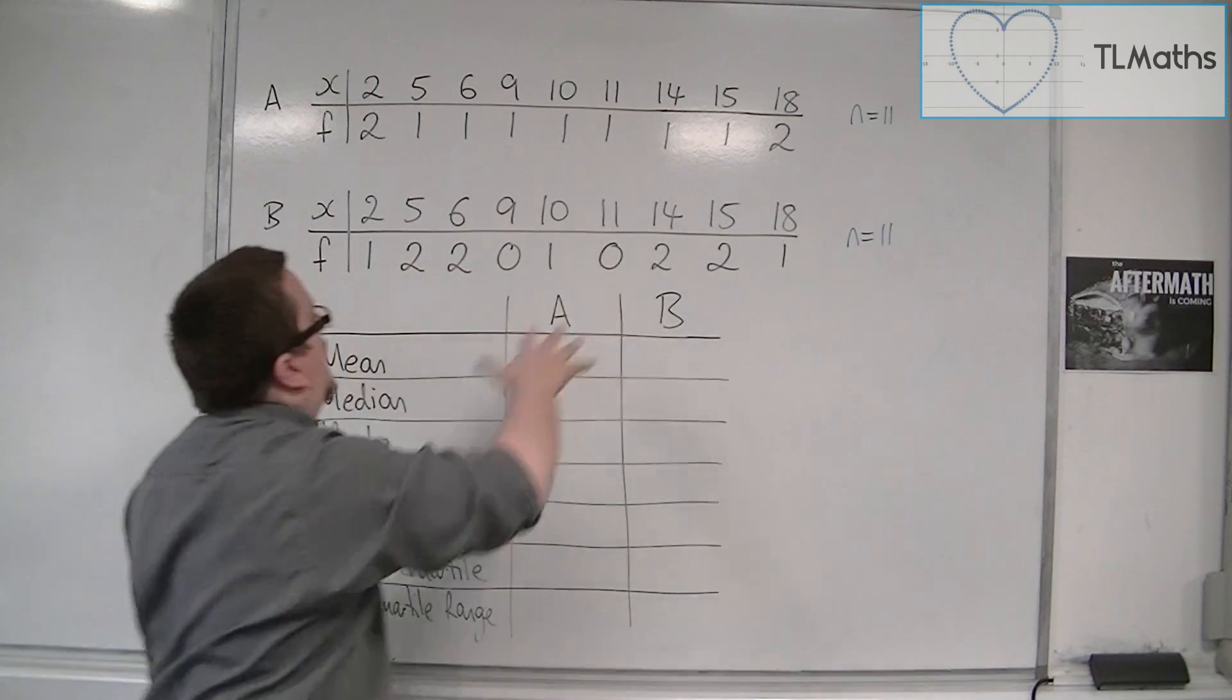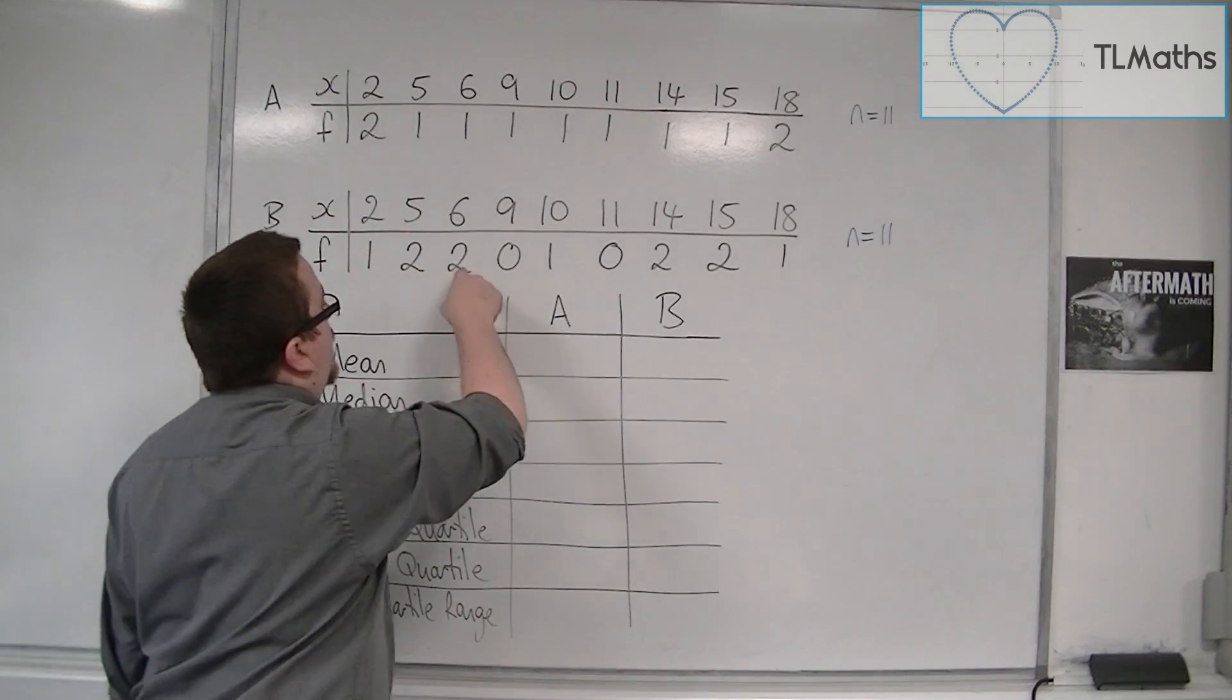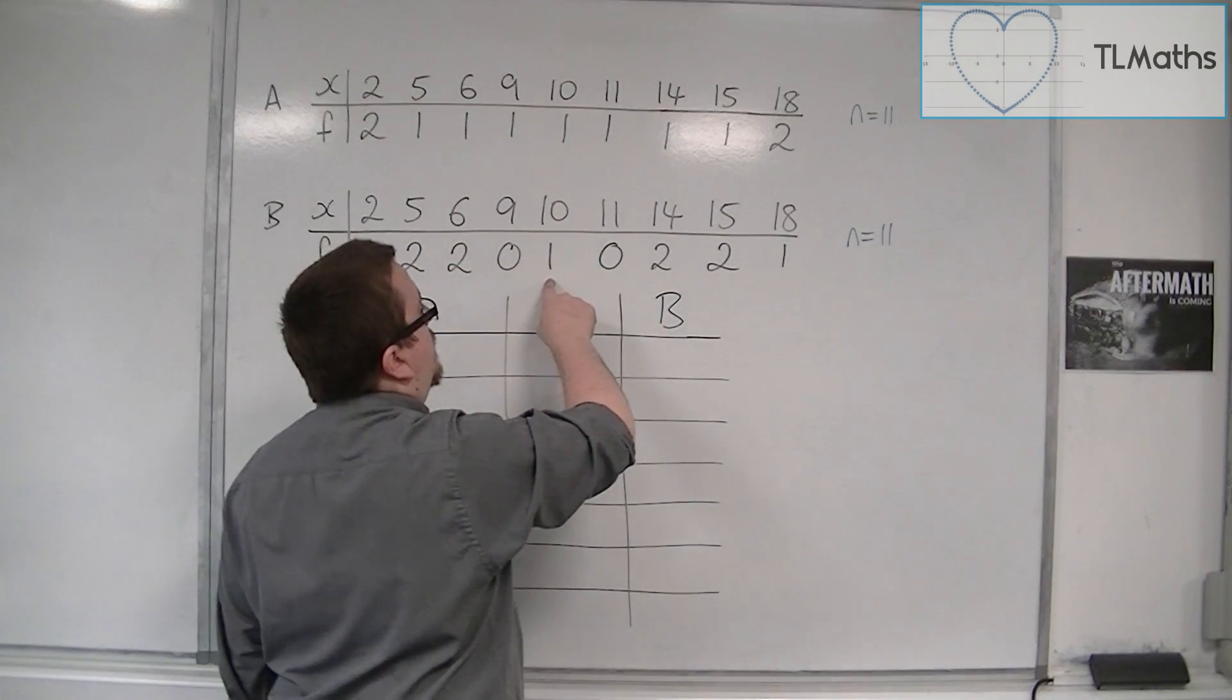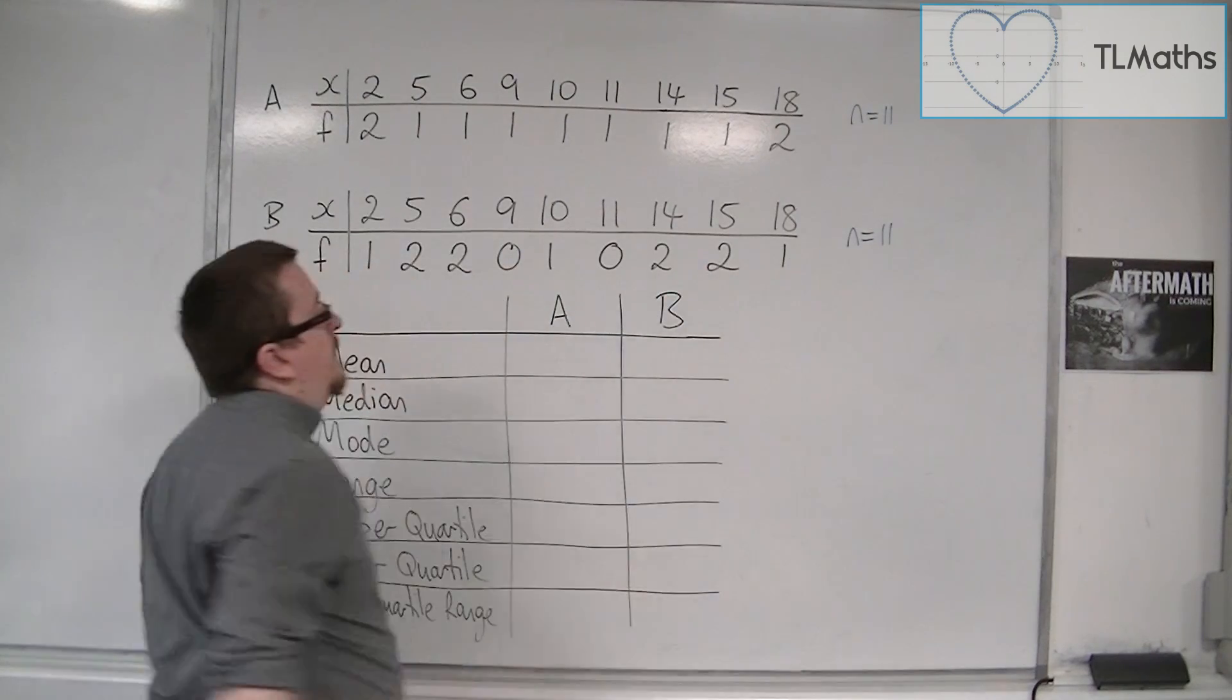And here I would have 2, 5, 5, 6, 6, 10, 14, 14, 15, 15, and 18.